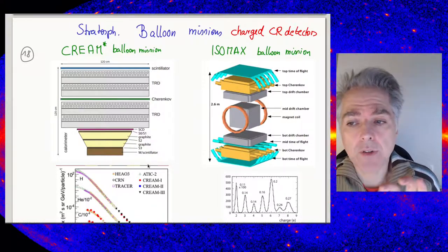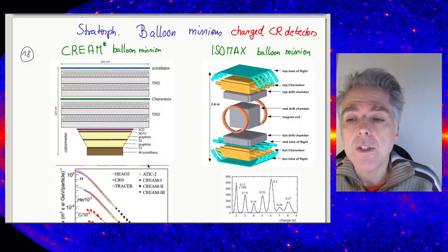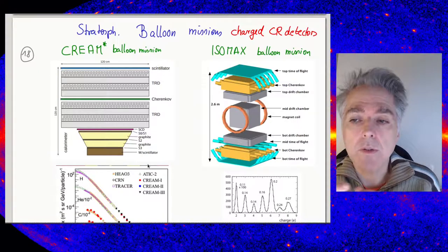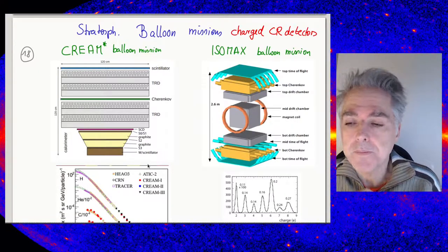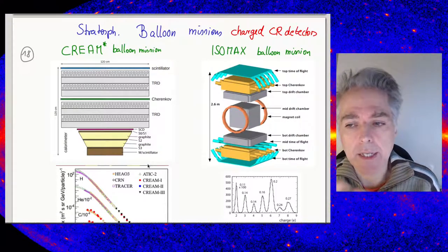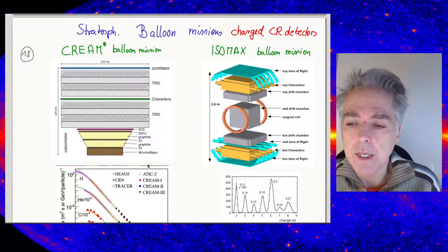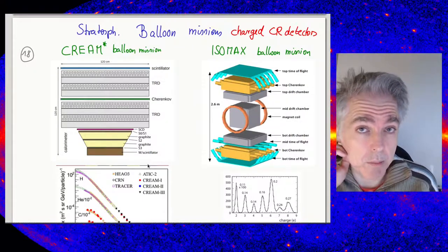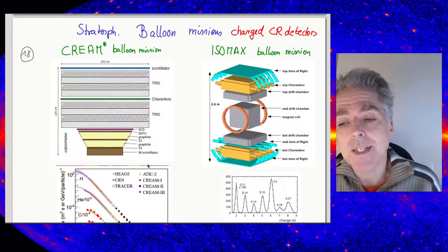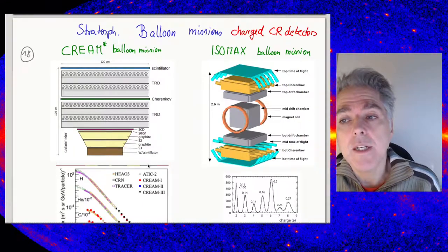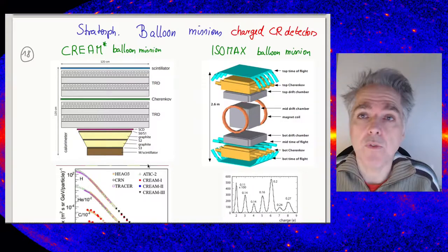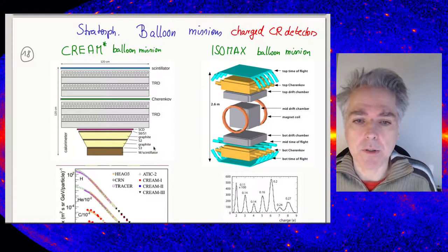In the middle there's a Cherenkov counter which uses Cherenkov light to measure momentum. It's acting as an additional detector component. This thing is very compact—120 by 120 cm, so a little more than a cubic meter. Given that all components except the tungsten at the bottom are lightweight, it can fly on a balloon for quite some time. That's the nice thing about balloon missions.